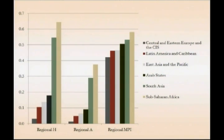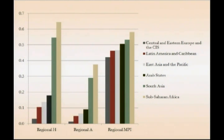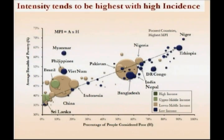Looking at MPI poor people, this is a striking finding. Here we're showing the head count and the intensity. Because MPI is the product, you can see that the green bar, which is South Asia, and the beige bar, sub-Saharan Africa, have much higher MPI head counts and intensities of poverty as well. So we've tried to draw a bit of attention to that.